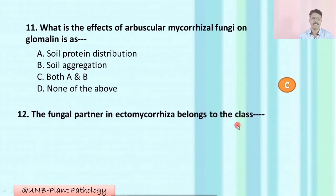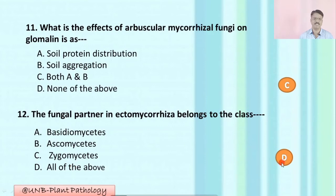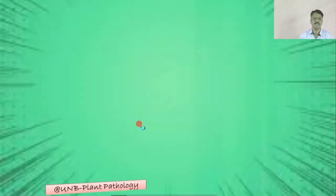Question number twelve: The fungal partner in ectomycorrhizae belongs to the class — A: basidiomycetes; B: ascomycetes; C: zygomycetes; D: all of the above. The correct option is D: all of the above — basidiomycetes, ascomycetes, and zygomycetes are all associated with ectomycorrhizae.